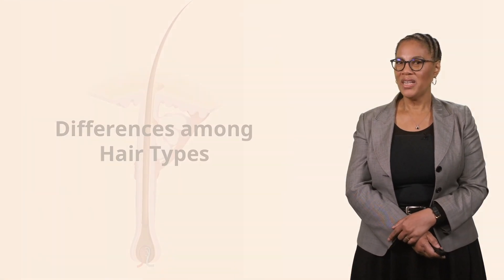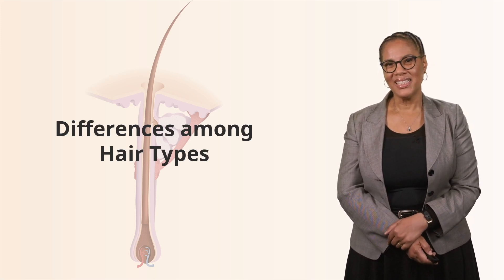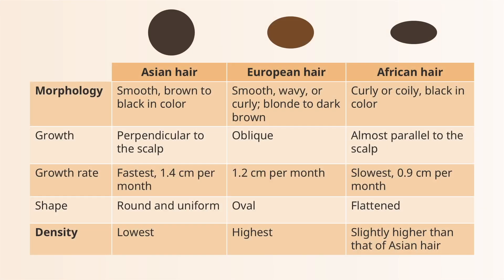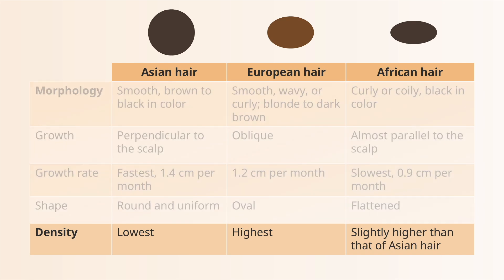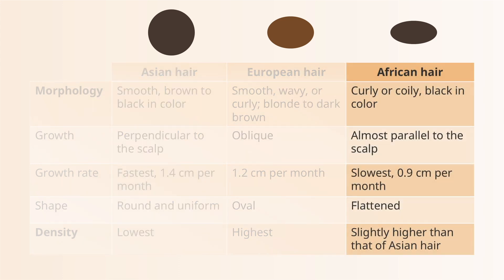Moving on to hair differences between melanin-rich and melanin-poor skin types: looking at the general classification of hair across Asians, Caucasians, and Africans, this table depicts the main differences in morphology, growth rate, and density. African patients tend to have slightly higher hair density than Asians, while Asians have the lowest hair density. Looking at cross-sections, hair shape differs: round and uniform in Asian hair, oval in Caucasian hair, and flattened in African hair.